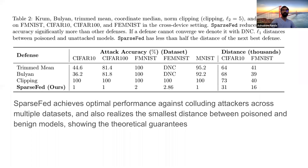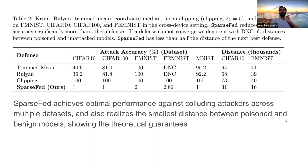We compare SparseFed to existing defenses — trimmed mean, boolean, and norm clipping — on the model poisoning attack. SparseFed reduces attack accuracy significantly when compared to the next best defense. When we compare the distances between the poisoned and unpoisoned versions of the model, we see that the attacker is able to shift models trained with other defenses significantly more than with SparseFed, which validates our theoretical guarantees.